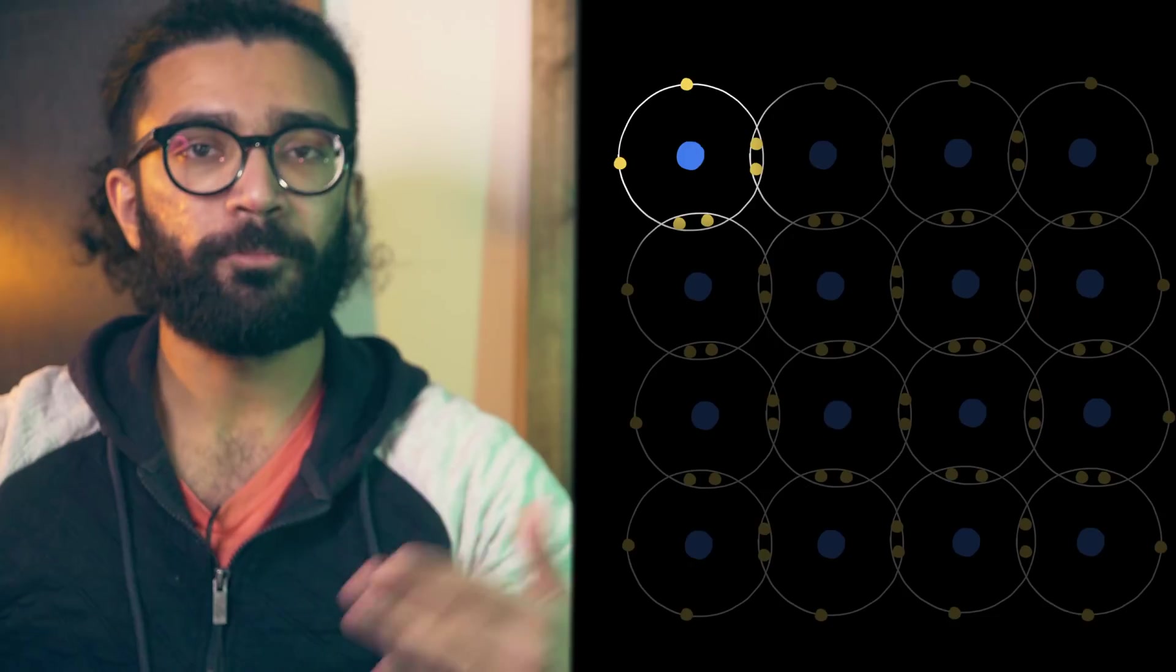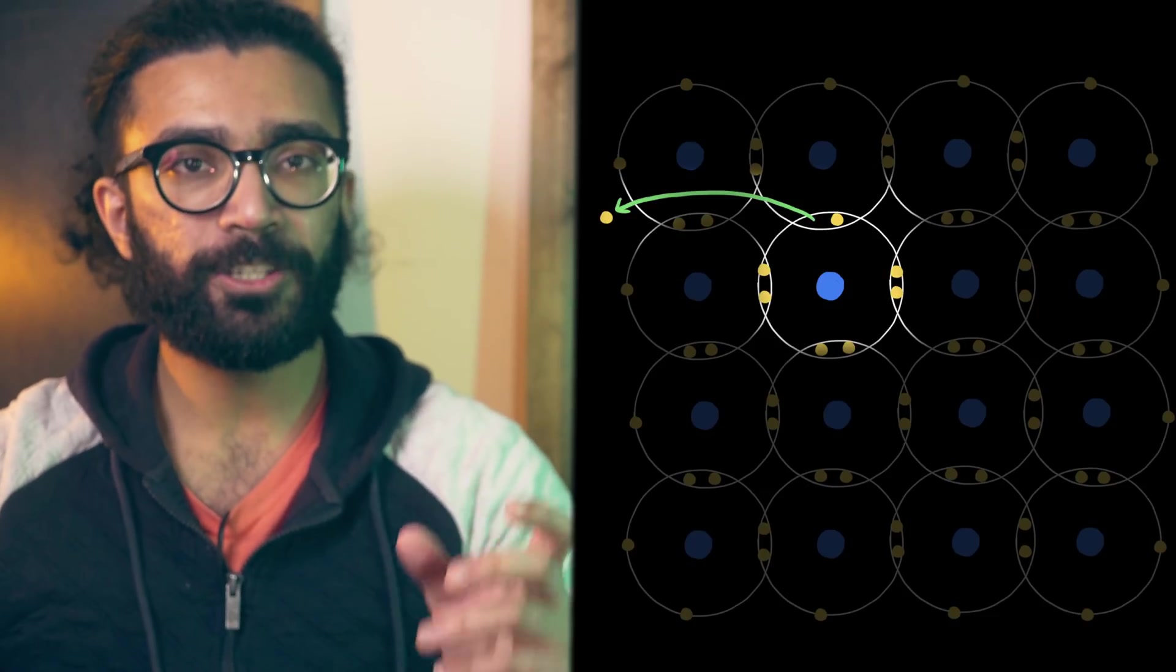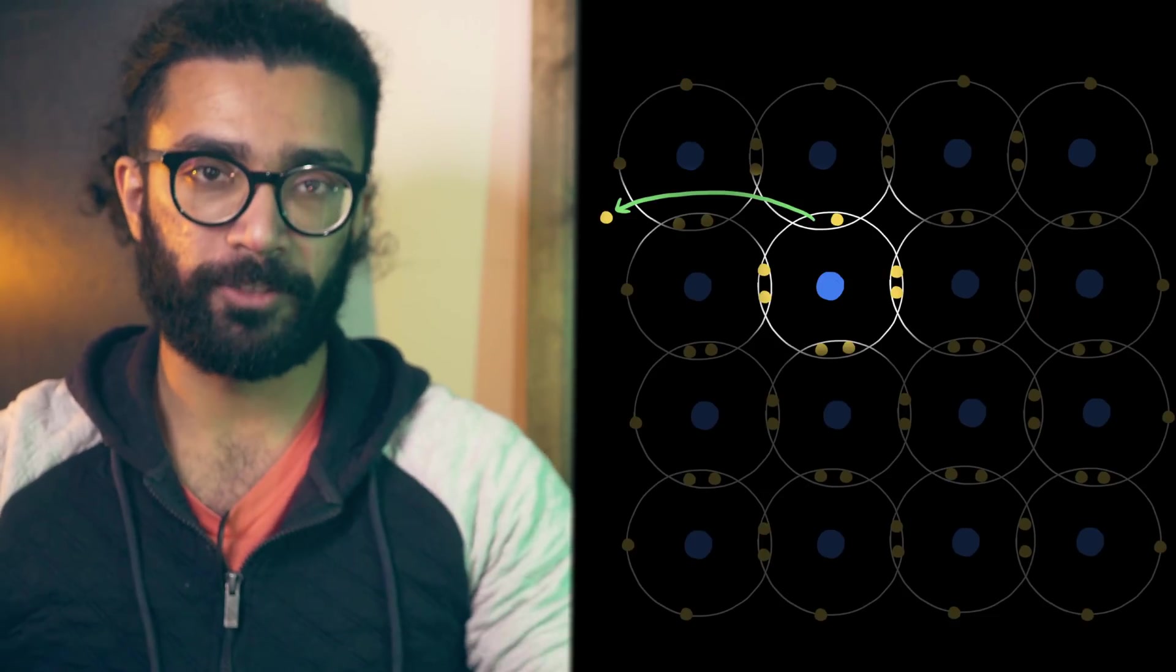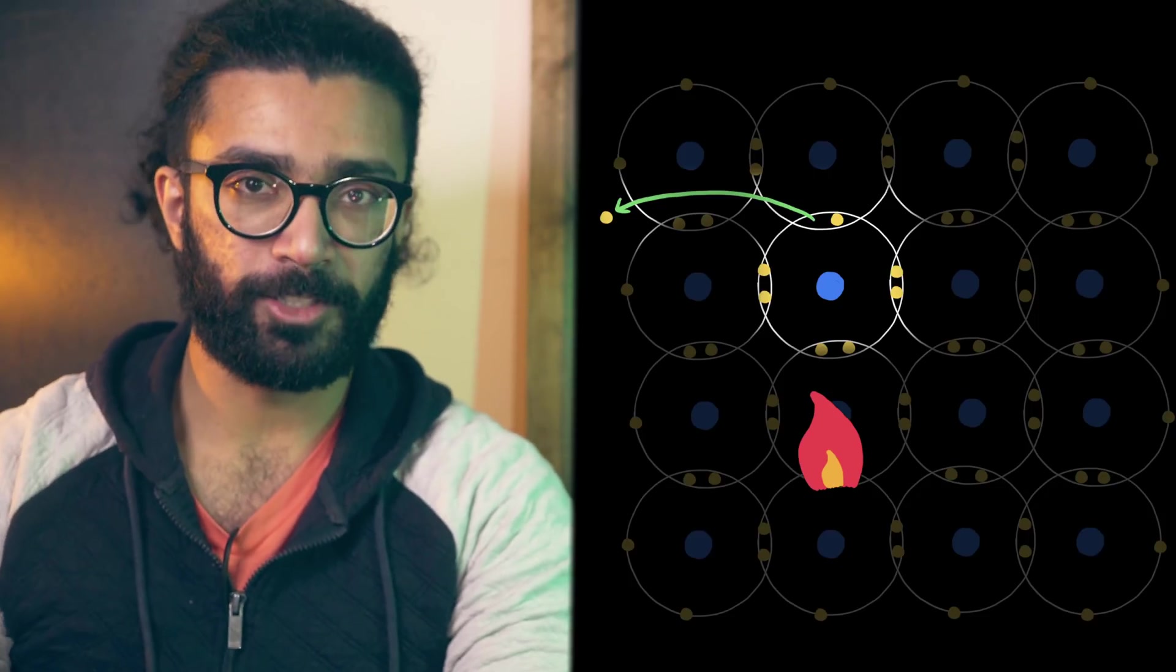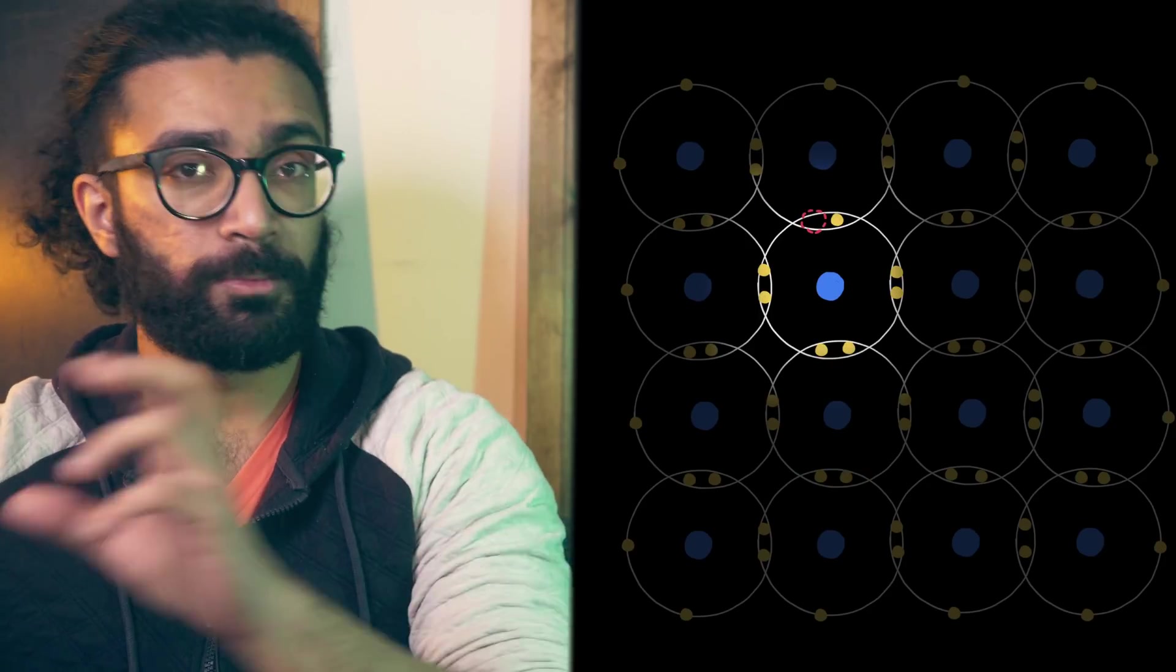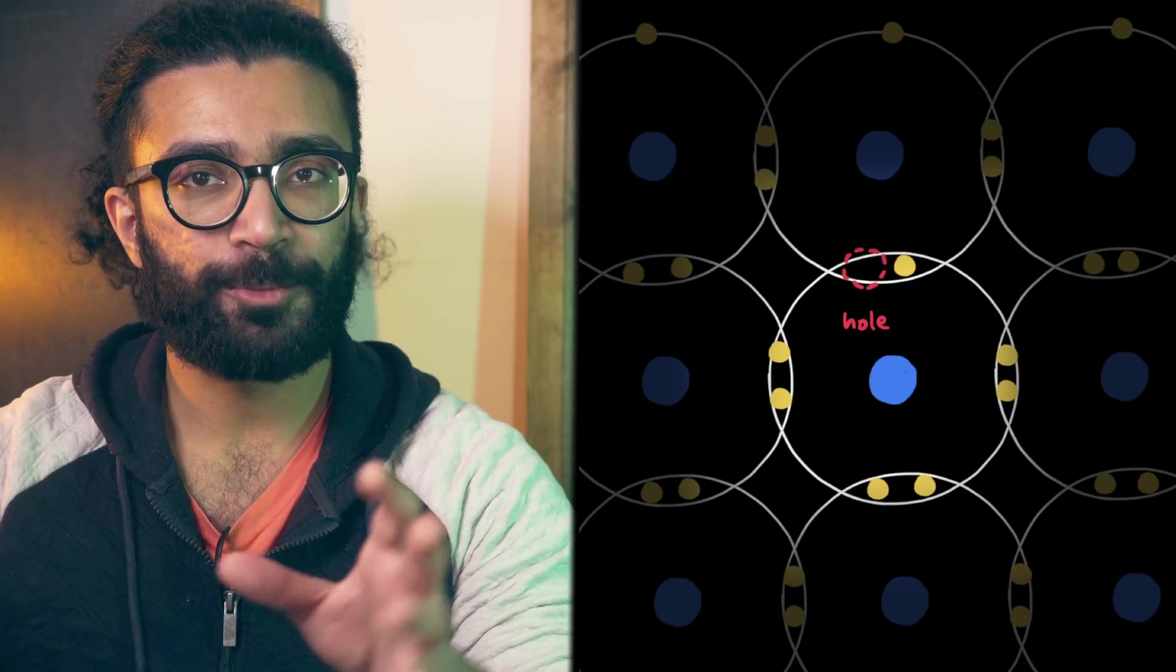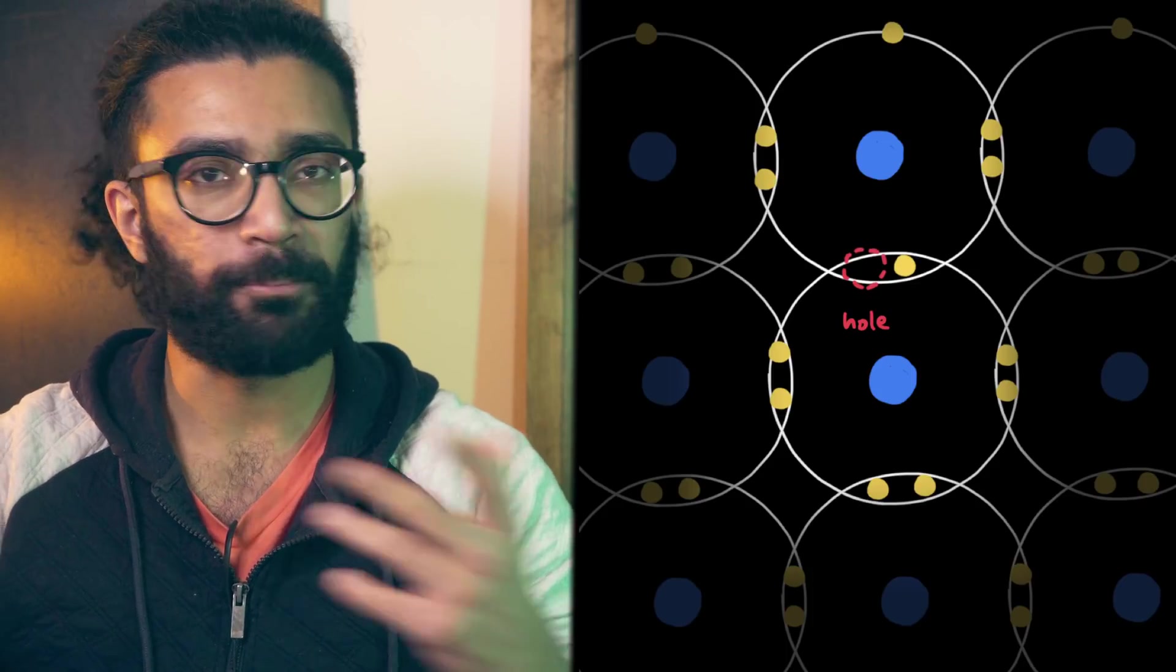Okay, so now let's imagine something causes one of these electrons to gain energy and leave this stable, low-energy configuration. This could be caused by something like thermal energy being given to the material. In this scenario, we now have a space where an electron could be. A hole, almost. Essentially, there is a space for an electron so that the bond between these two atoms can be re-formed.